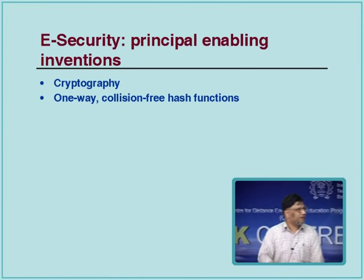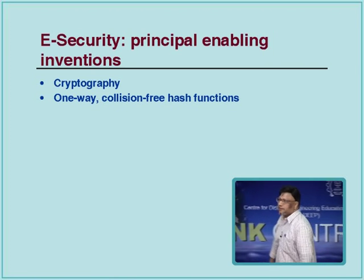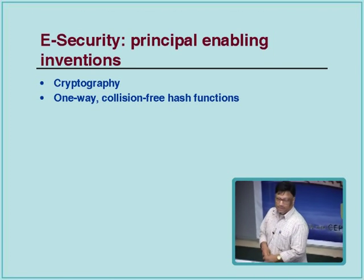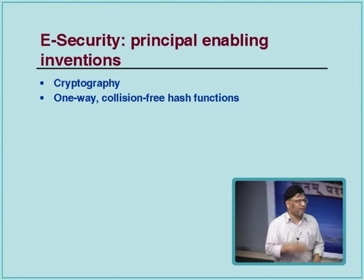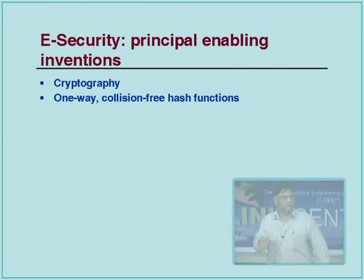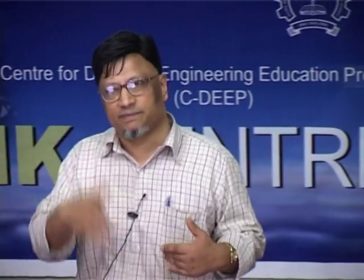The two pillars of e-security are digital signatures and MACs — message authentication codes. A message authentication code: what is it and does it guarantee non-repudiation? The main pillars are cryptography and the cryptographic hash.